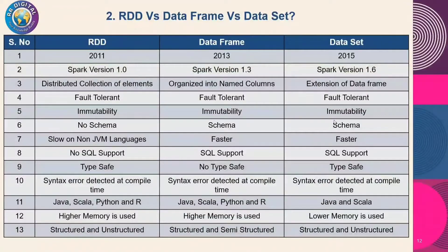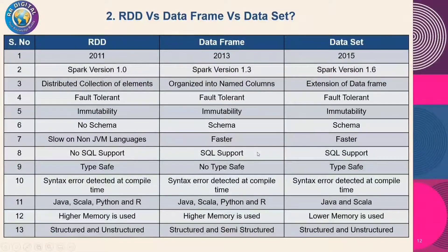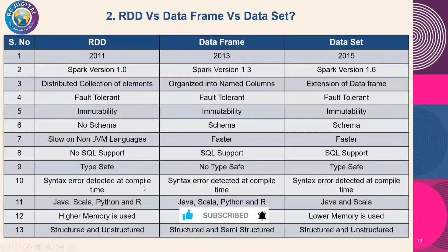RDD loads data files with no schema, while DataFrame and Dataset store data into tables, so they are schema-based. RDD performs slower on non-JVM languages, whereas DataFrame and Dataset are faster on non-JVM languages. RDD does not support SQL, but DataFrame and Dataset do support SQL. Regarding type safety: RDD is type safe, DataFrame is not type safe, and Dataset is type safe. Syntax errors are detected at compile time.